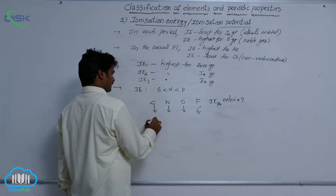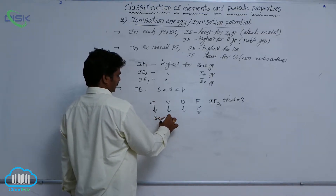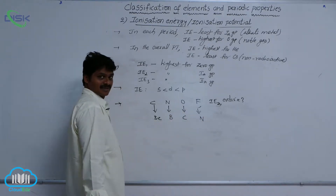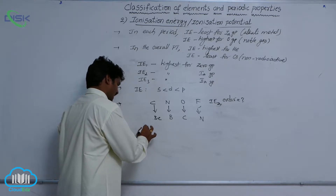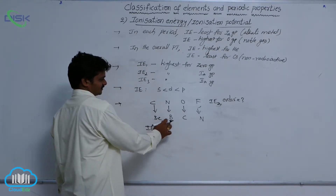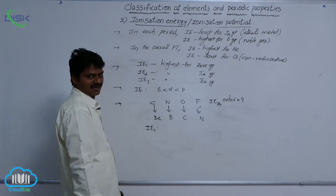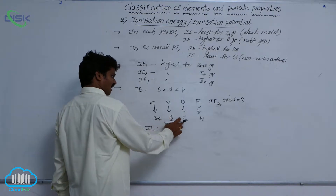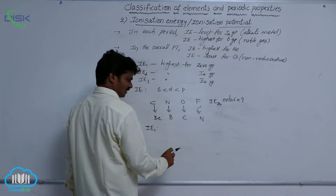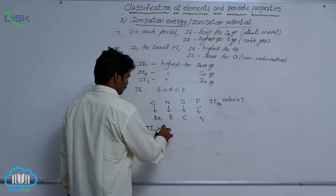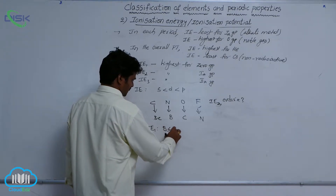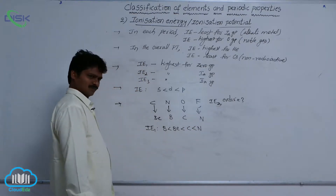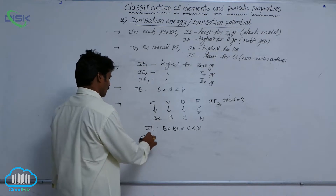In place of carbon write beryllium, here boron, here carbon, here nitrogen. These are the elements obtained by decreasing two units from the given elements. So the IE1 order is: boron less than beryllium less than carbon less than nitrogen.